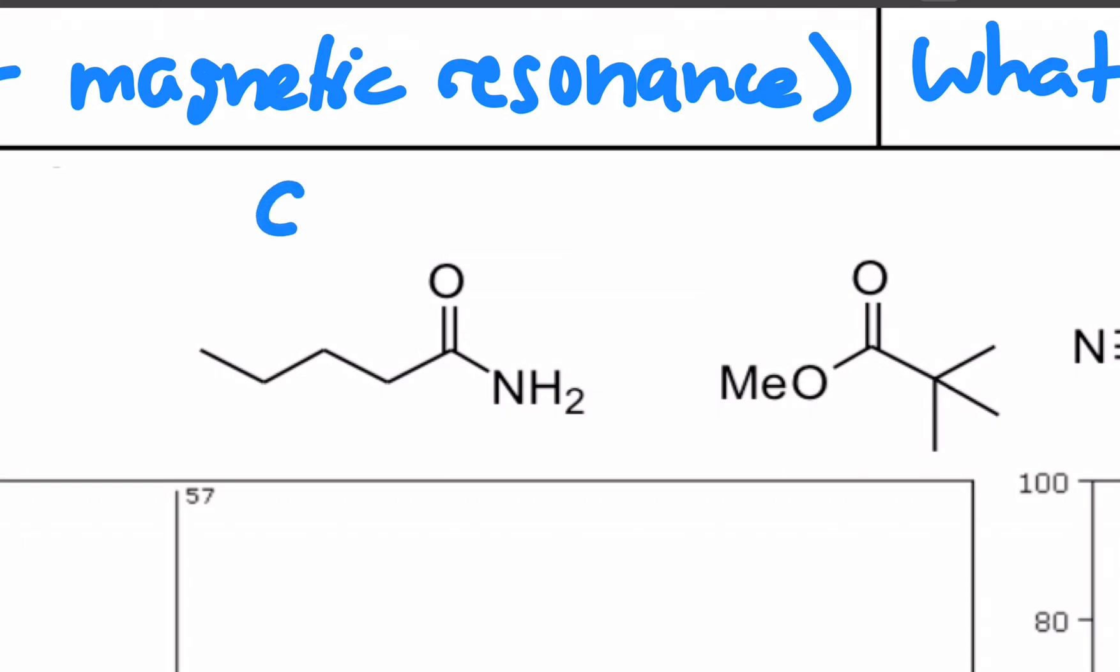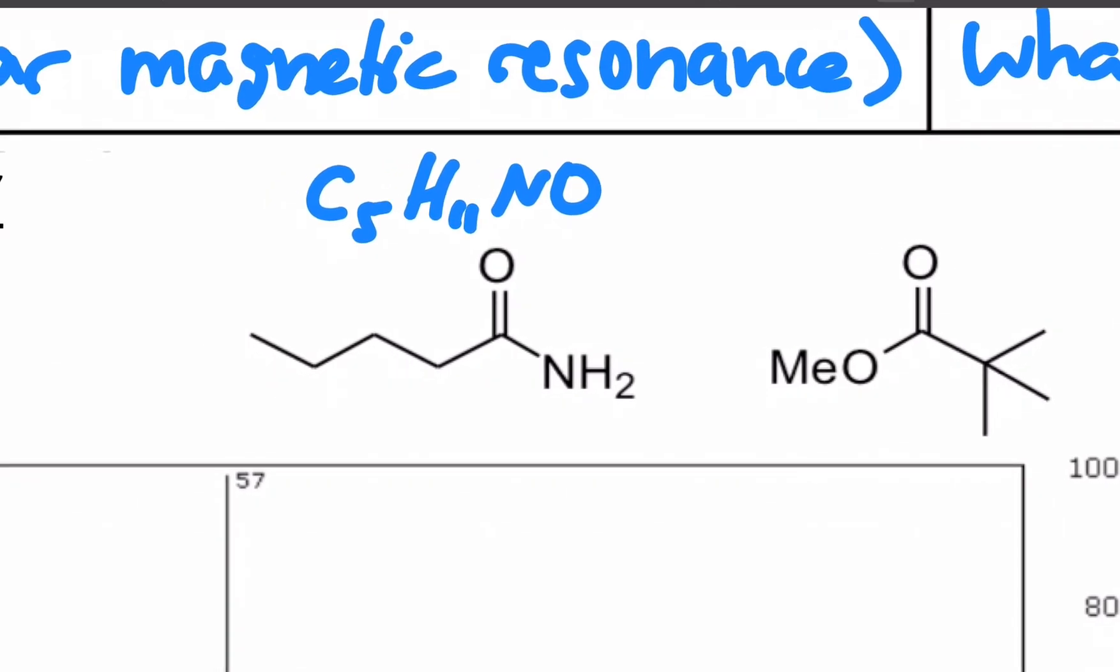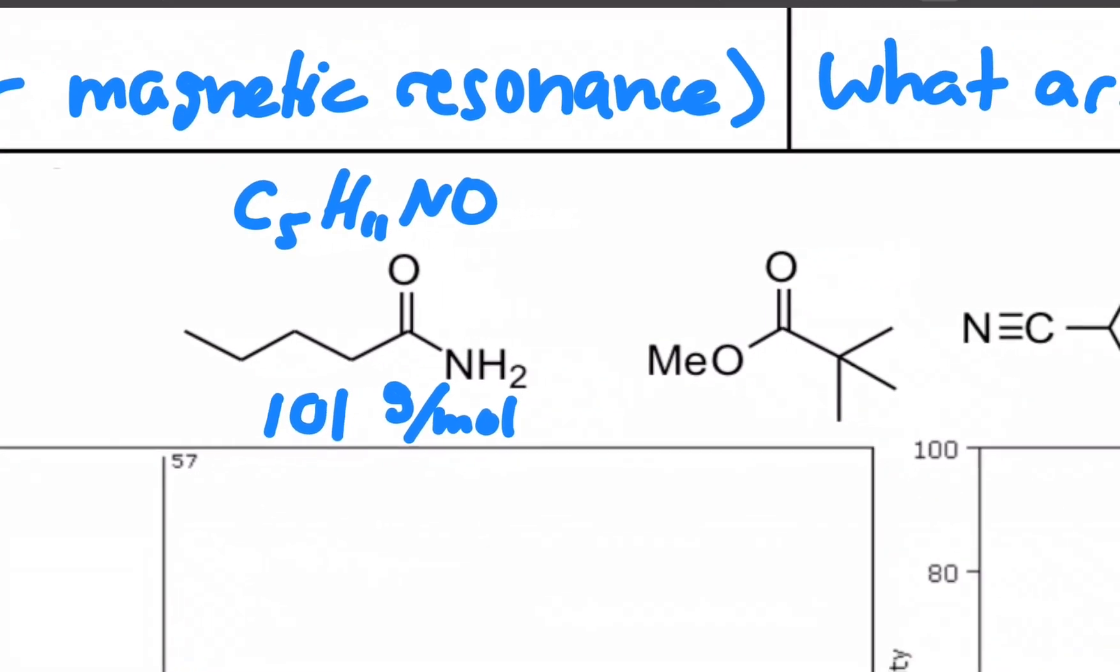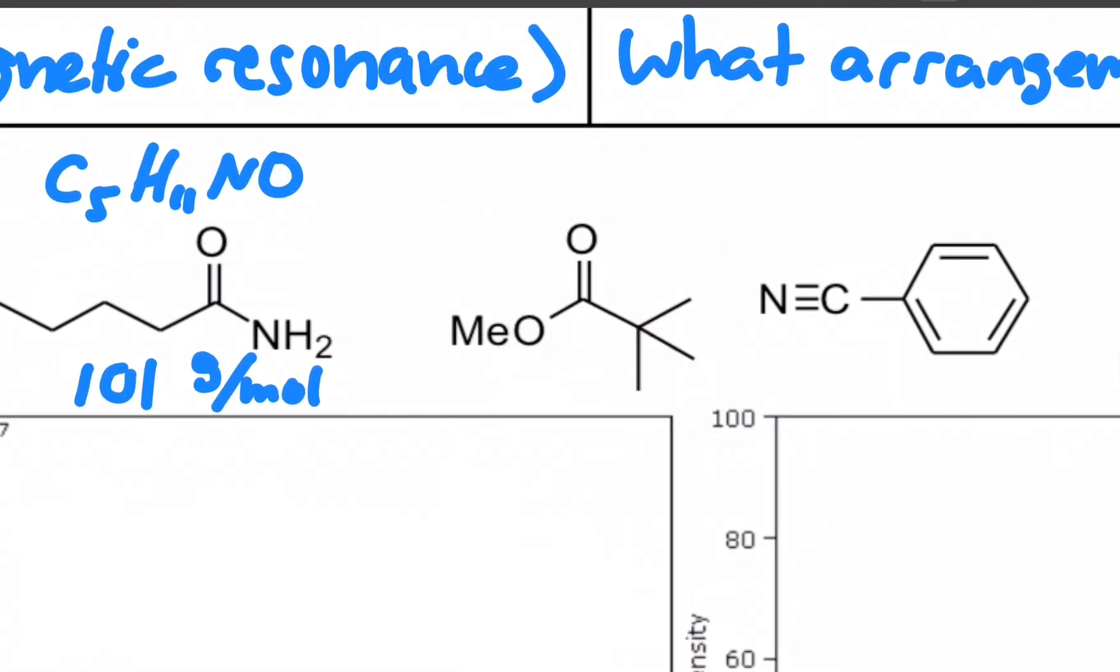So the first one, the amide, is C5H11NO. And every chemist knows carbon is roughly 12, H is 1, nitrogen 14, and oxygen 16. So when I add all that up, I get a molar mass of around 101 grams per mole. And if you go and do the other three, the ester right next to it would be C6H12O2, weighing in at 116.